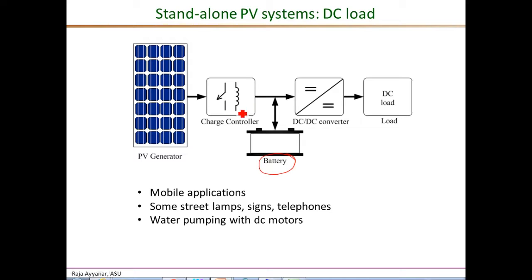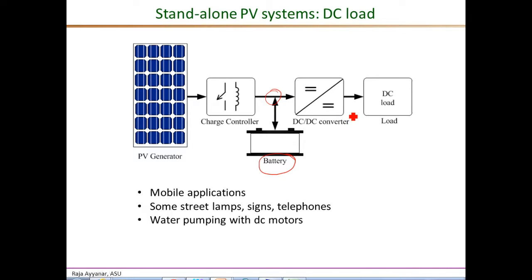We have a charge controller which charges the battery from the PV panels, and we also need a DC-DC converter that regulates the slightly varying battery voltage into a precisely regulated DC voltage as required by the loads. It is also possible to have multiple DC outputs to support multiple DC loads requiring different voltage levels.